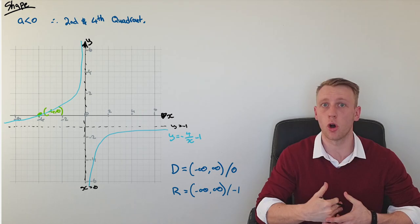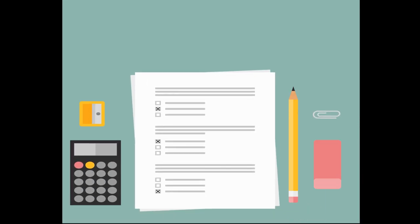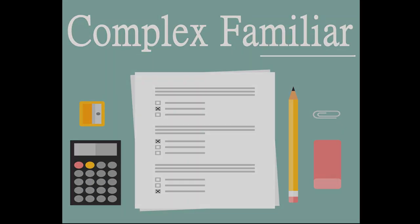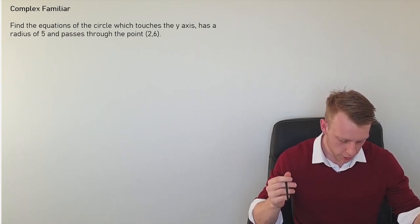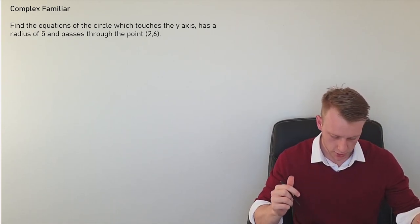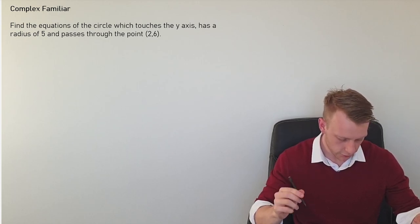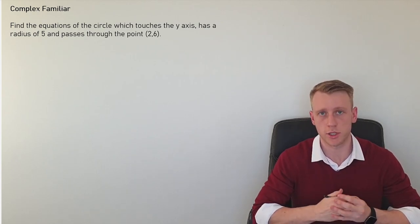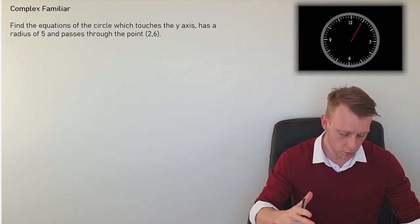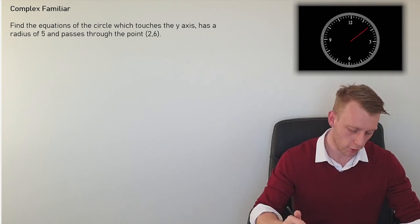Moving on to something more complex familiar. A question that looks somewhat challenging - find the equations of the circle which touches the y axis, has a radius of five and passes through the point (2,6). So this one should take you about eight to ten minutes. So again, pause it, put a stopwatch on and give it a crack.